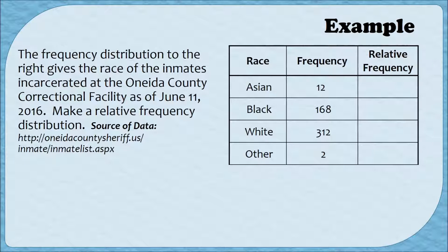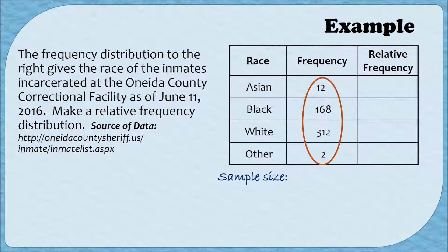In order to find the relative frequencies for each category, we need to know our sample size. To find the sample size, all you have to do is add down the frequency column. Adding together 12, 168, 312, and 2, we get a sample size of 494 people.